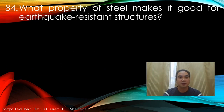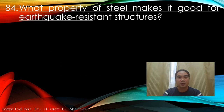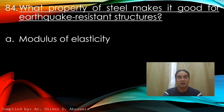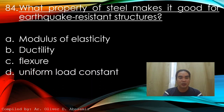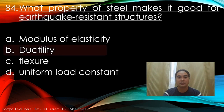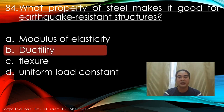Question 84: What property of steel makes it good for earthquake-resistant structures? A) Modulus of elasticity, B) Ductility, C) Flexure, D) Uniform load constant. Answer: B) Ductility.